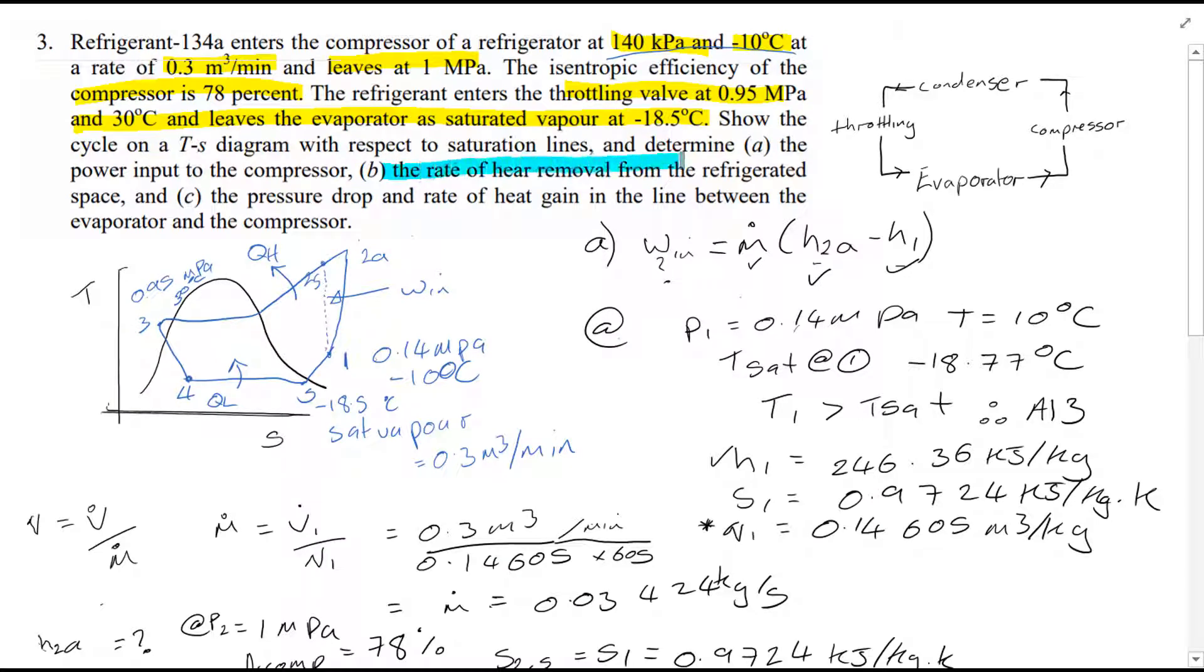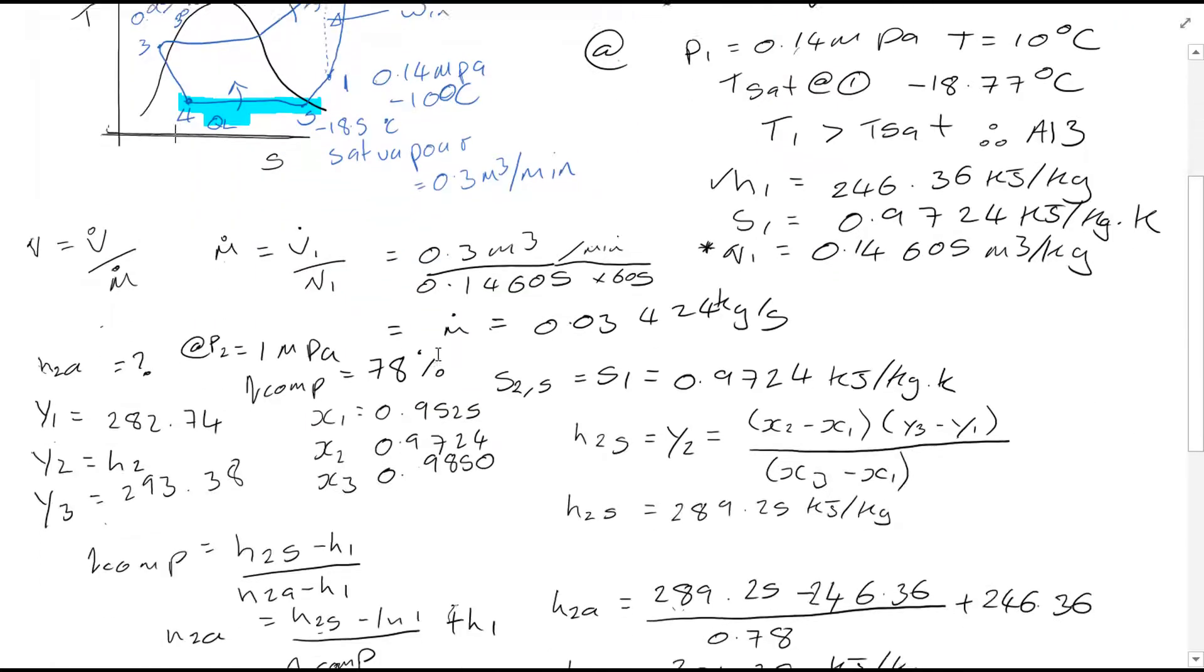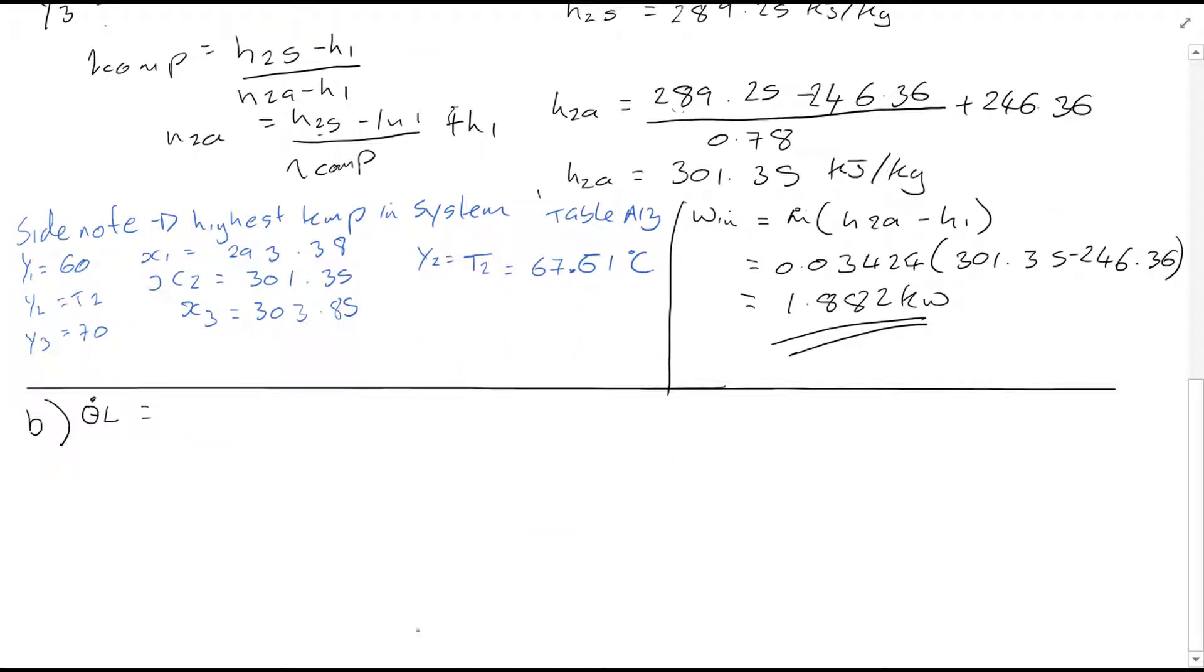So part B asks us to look at the rate of heat removal from the refrigerated space. So we're actually interested in Qₗ here. So we're interested in this region. So if we scroll down now, you'll see Qₗ is equal to the mass flow rate times by (H₅ minus H₄). So let me bring your attention back to the fact that process 3 to 4 is isenthalpic. Therefore, enthalpy is the same. So H₃ is equal to H₄.